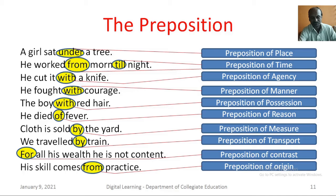The Preposition. A preposition is a word used with a noun or a pronoun to show how the person or thing denoted by the noun or pronoun stands in relation to something else. A girl sat under a tree — here, under is a preposition of place. He worked from morning till night — here, from and till are prepositions of time.